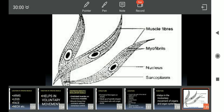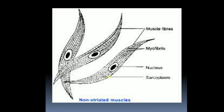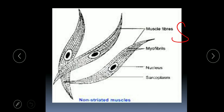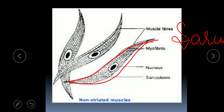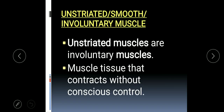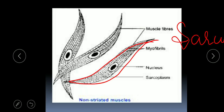It has a single nucleus and there is no alternate lining of dark and light bands. The term 'sarco' is used for muscles. So the plasma membrane of the muscle cell is known as sarcolemma. The endoplasmic reticulum of the muscle cell is known as sarcoplasmic reticulum. The cytoplasm of the muscle cell is known as sarcoplasm.